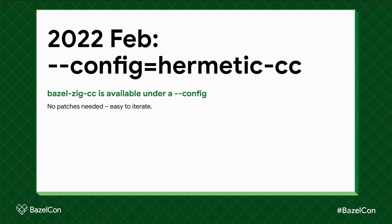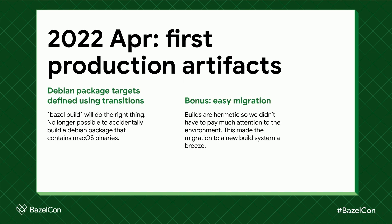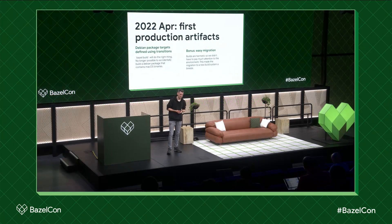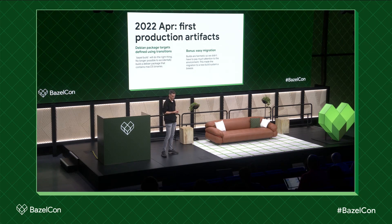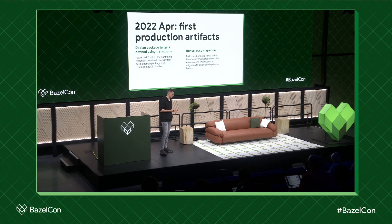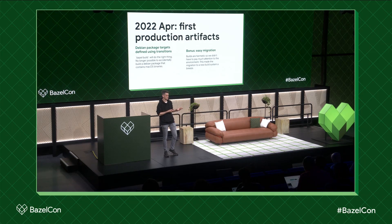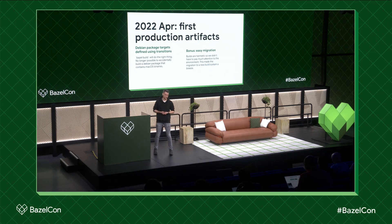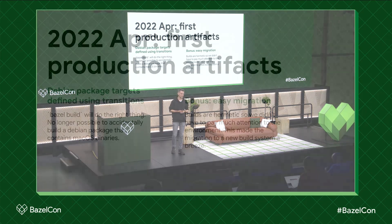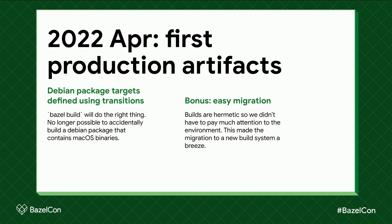In April, the first production artifacts built with zig cc hit production. Our team owns the wrappers for building Debian packages in Bazel, so we were in a good spot to start experimenting there. We defined our targets using transitions, which means Bazel will do the right thing — it's no longer possible to accidentally build a Debian package containing binaries compiled for macOS. Previously with plain rules_pkg, if you don't specify the platform it just builds for your host platform, which is probably not what you want. At the same time we were migrating to a new CI system, and since these builds were hermetic we didn't have to worry about what libraries and compilers are available on the build hosts.